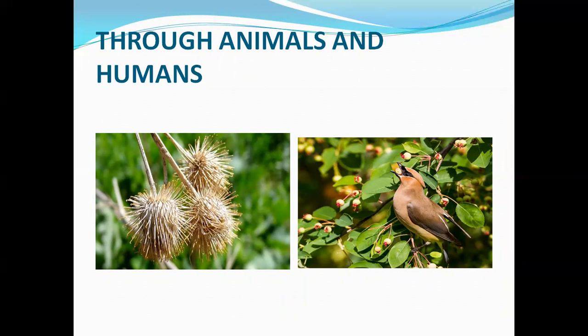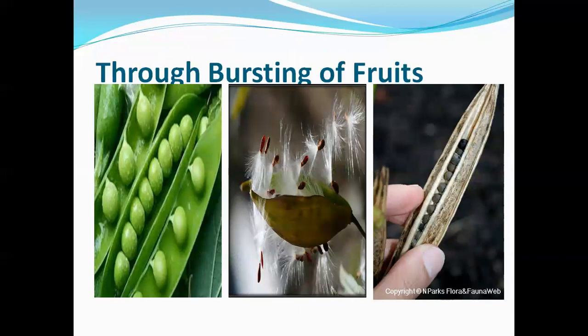Birds also eat fruits and seeds are dispersed through their droppings. The last method is dispersal by explosion or bursting of fruits. Some fruits like peas, balsam, and lady finger become dry and burst when they are ripe. Their seeds pop out and are scattered away in all directions.